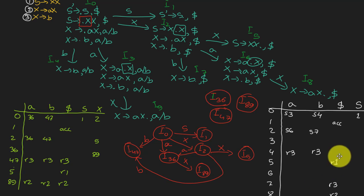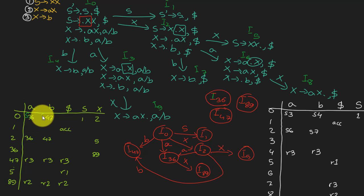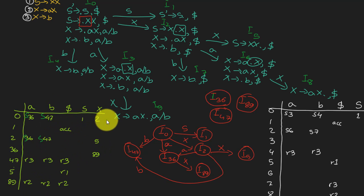If you can draw the LR1 table you can definitely draw the LALR1 table. For the shift moves, for example in state 0 you go to state 3, but since two states are merged and became 3-6, the shift move is S3-6. So those are the shift moves, and the go-to is also the same except before we used just 9, now we use 8-9.